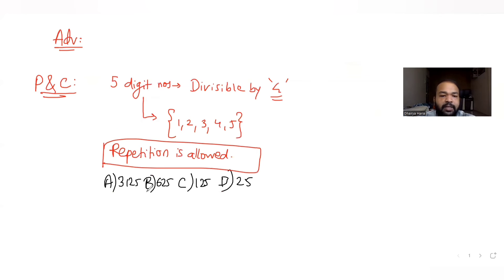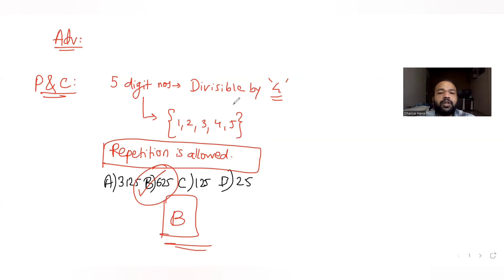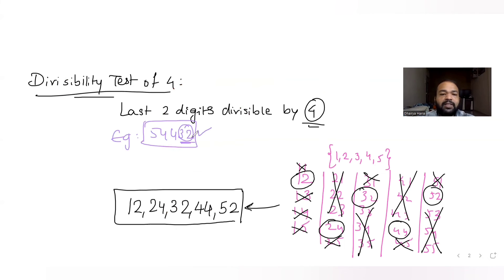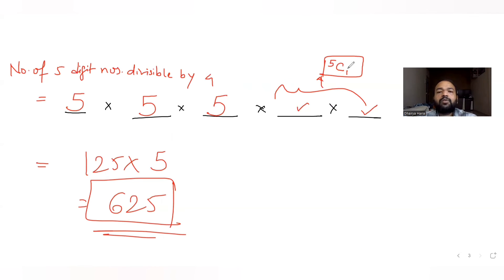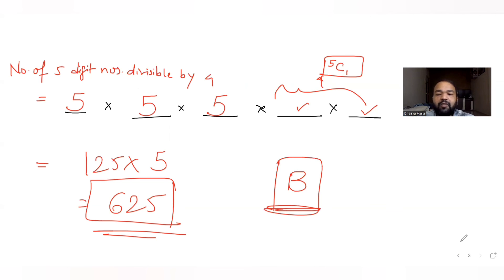So there are 625 five-digit numbers which are divisible by 4. Looking at the options, that matches option B. So B is the correct answer. We used the divisibility test of 4 — the last two digits must be divisible by 4 — and found 5 valid two-digit endings from {1, 2, 3, 4, 5}. For the first three places, any of the 5 numbers can be chosen, giving 625 total.